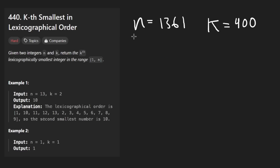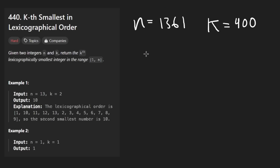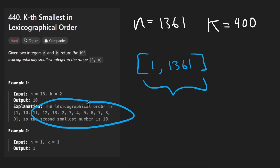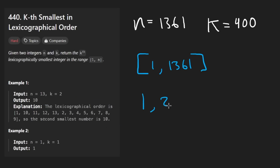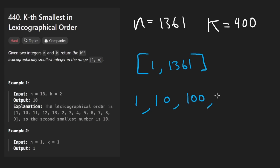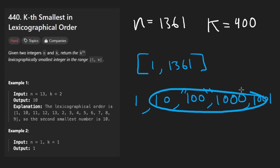Let's consider this example. Let's say n is 1361 and k is 400. There's a range of numbers from 1 to n, and those numbers are sorted lexicographically — so not by 1, 2, 3, but based on the digit. So we'd have something like 1, 10, 100, 1001... basically, it's the same way strings are sorted. Imagine that this was a string rather than a number.